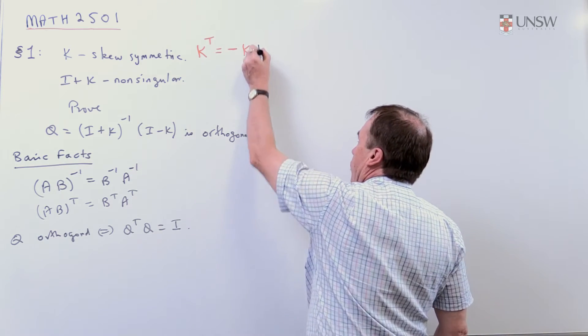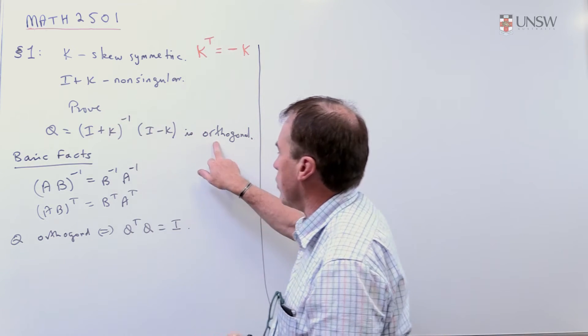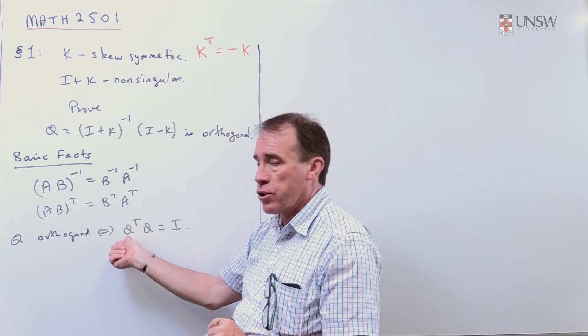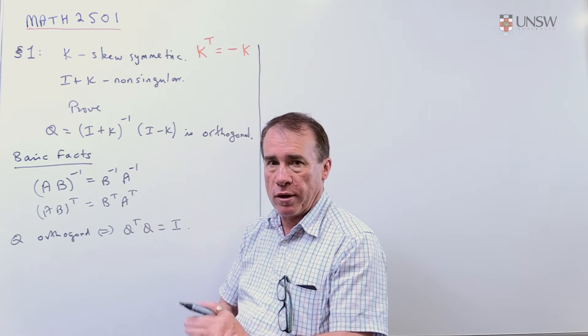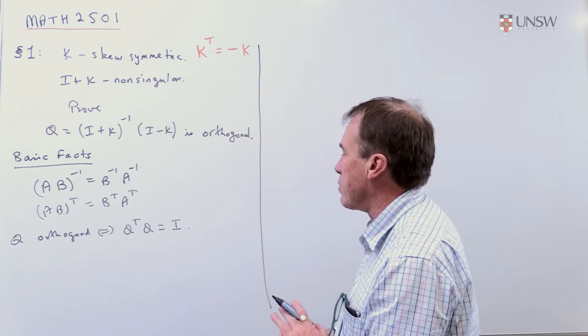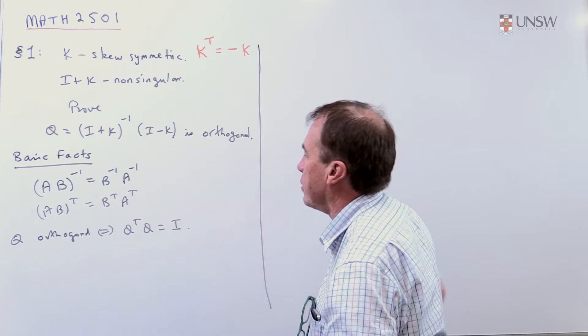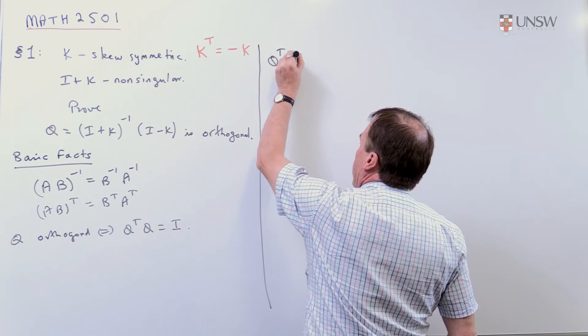So putting together all of these bits and pieces, we're going to take this matrix here and we want to show it's orthogonal. So to show it's orthogonal, I have to take its transpose, multiply it by itself, and we have to show the identity matrix comes out. So, I'm going to be very careful because matrix multiplication is not commutative, so I'm going to be careful how things cancel.